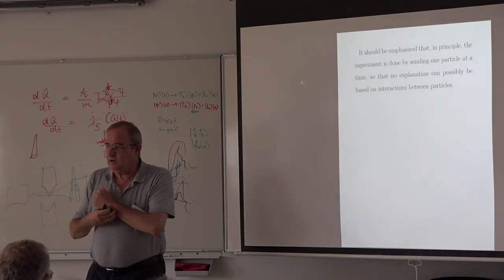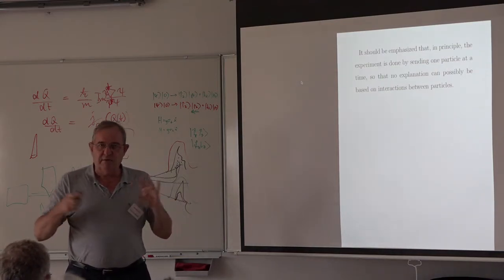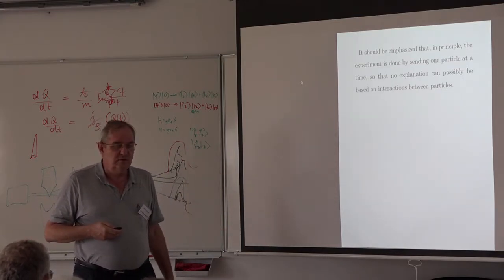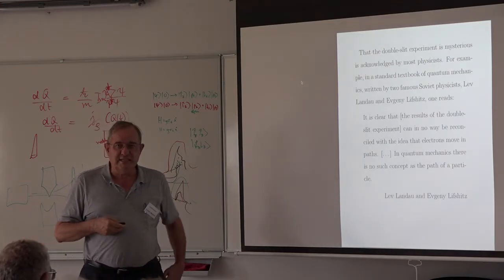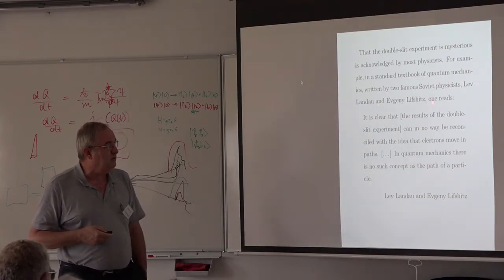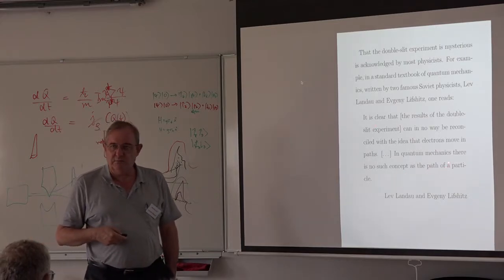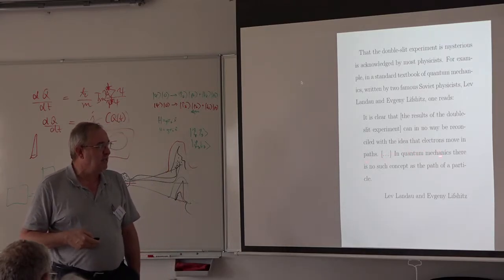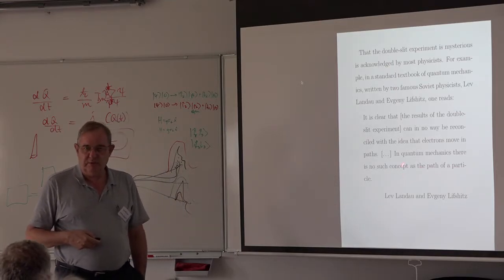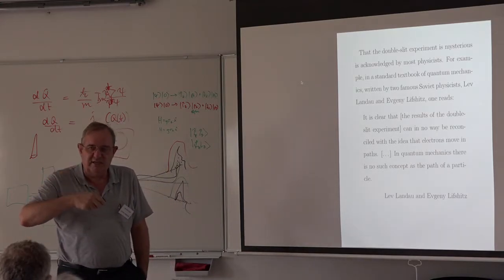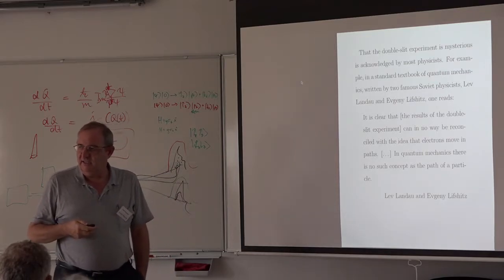All these experiments are done one particle at a time, so there is no explanation coming from possible interaction between particles. The double-slit experiment is considered mysterious. One of the most standard textbooks, written by Landau and Lifshitz, states: it is clear that those results can in no way be reconciled with the idea of electrons moving along paths. In quantum mechanics there is no such concept as the path of the particle. I showed this morning that the de Broglie-Bohm theory shows that simply falls — it can be reconciled.